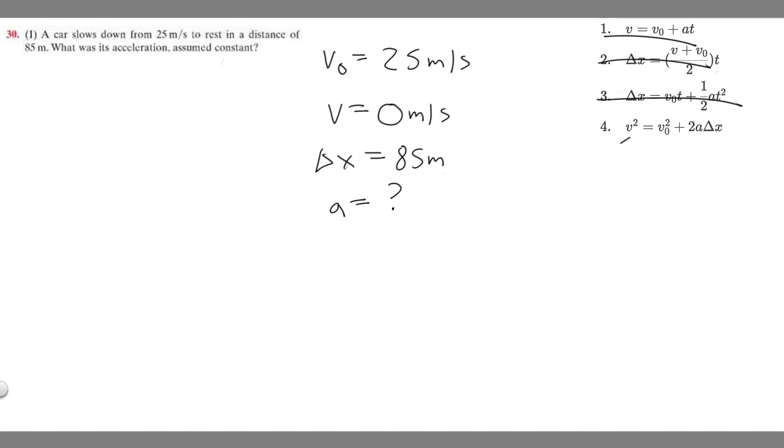But if we look at the fourth one, we're given v, we're given v₀, and then we're given Δx. And so we can solve for a because we have all the variables.